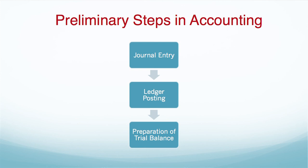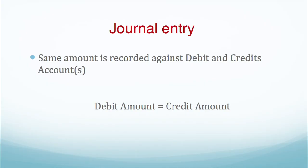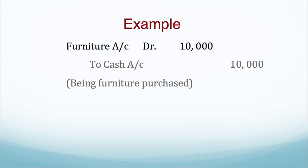Before discussing the errors indicated by trial balance, let us first see the mechanism of how the trial balance is agreed. We have to start from the stage of the journal. In the journalizing process, for every debit entry we make a credit entry. In this example with imaginary figures, we have debited the furniture account and credited the cash account — the transaction being the purchase of furniture for cash. On the debit side we recorded rupees 10,000, and on the credit side against cash account we also recorded rupees 10,000.